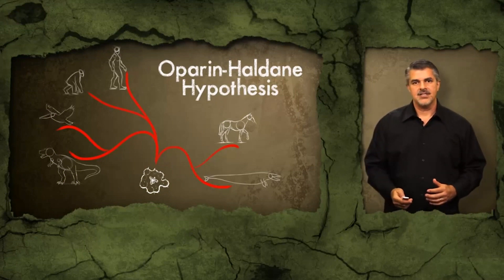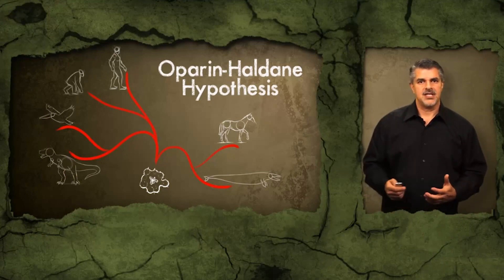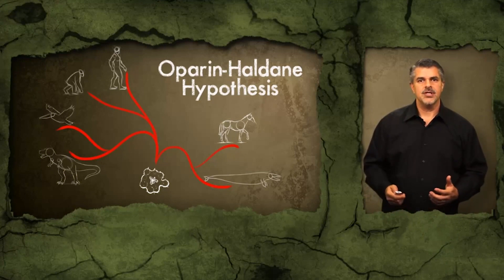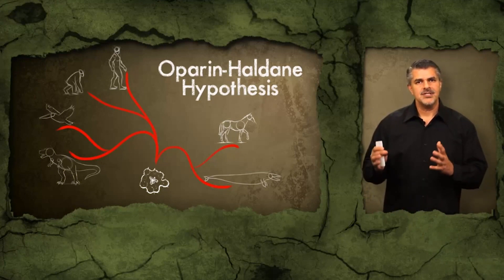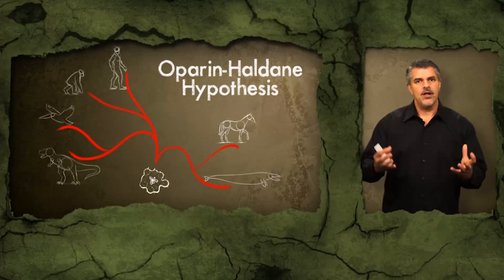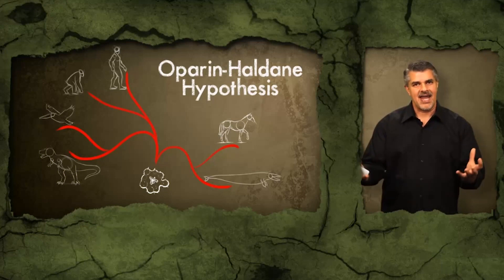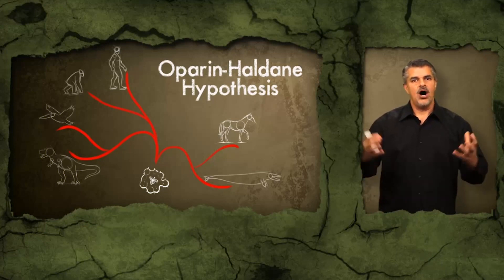The idea here is that the origin of life — abiogenesis, chemical evolution — is a critical and important idea in the evolutionary paradigm, explaining how life itself got started from an inanimate, nonliving universe.